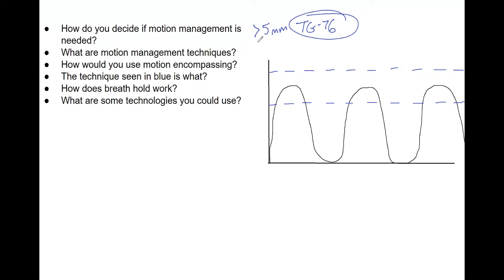What are some of the various motion management techniques? You have motion encompassing, gating, breath hold, shallow breathing that's forced or compression, and real-time tumor tracking. There are many options, and it's important for you to know which ones your clinic does, why you use them, and the advantages and disadvantages of all of them, because your examiner will probably hone in on one or two of them, not ask you about all of them.